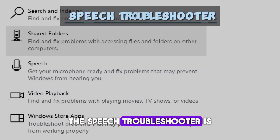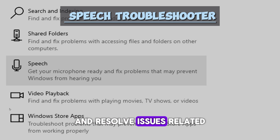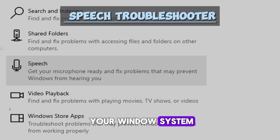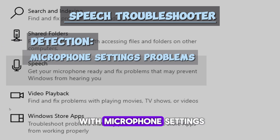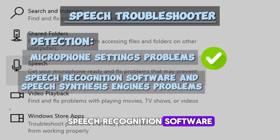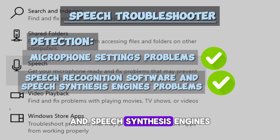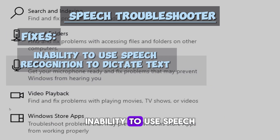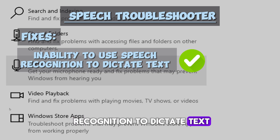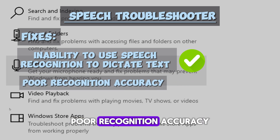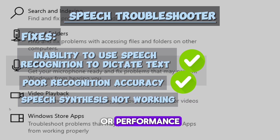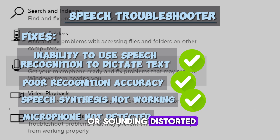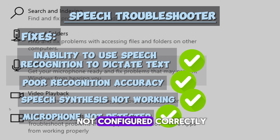The Speech troubleshooter is designed to diagnose and resolve issues related to speech recognition and speech synthesis on your Windows system. It can detect problems with microphone settings, speech recognition software, and speech synthesis engines. Common issues it addresses include inability to use speech recognition to dictate text or control the computer, poor recognition accuracy or performance, speech synthesis not working or sounding distorted, and microphone not detected or not configured correctly.